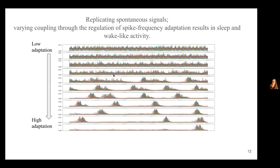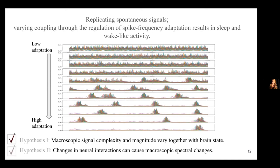So here, what we find is by changing the spike frequency adaptation, you go from this very asynchronous state to a state where you have slow waves. So the macroscopic signal complexity and magnitude vary together with brain states and changes in neural interactions can cause macroscopic spectral changes.